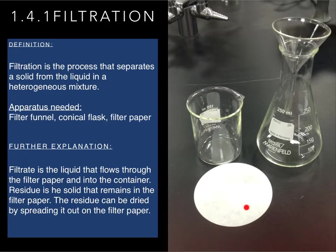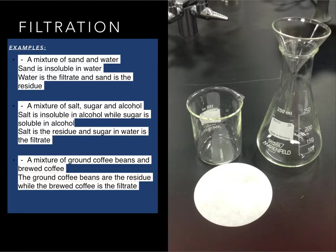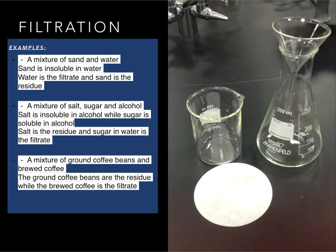In order to use the filter paper, you don't put it as-is in the funnel. You have to fold it twice and then open it to form the shape of a small cone. Examples of heterogeneous mixtures with a solid and liquid include sand and water, since sand is insoluble in water — it doesn't dissolve — so water will be the filtrate and sand will be the residue trapped on the filter paper.